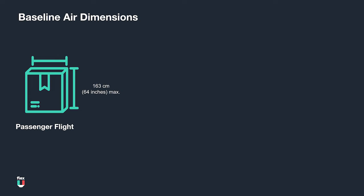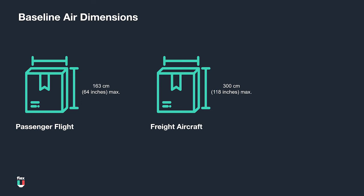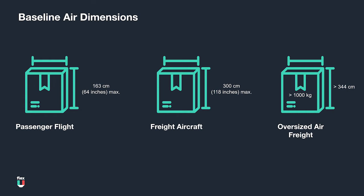First, the maximum height of a pallet to be loaded on a passenger flight is 163 cm or 64 inches. Second, the maximum height of cargo you can accept on a 747 freighter — the biggest of regular freighter aircrafts — is 300 cm or 118 inches.